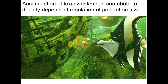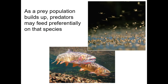This is Nemo making the aquarium really toxic, showing that toxic waste can decrease the number of babies produced. Here are some predators feeding on a particular species — if one organism gets really high in population, predators will target those more because they're easy to get.